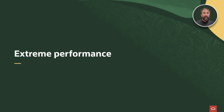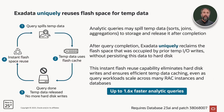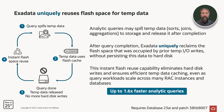Let's continue talking about extreme performance. Exadata uniquely reuses flash space for temp data. Analytic queries may spill temp data — such as sorts, joins, and aggregations — to storage and release it after completion. Exadata uniquely reclaims the flash space that was occupied by prior temp IO writes without persisting this data to hard disk. This instant flash reuse capability eliminates hard disk writes and ensures efficient temp data caching, even as query workloads scale across many rack instances and databases. This results in up to 1.6 times faster analytic queries.